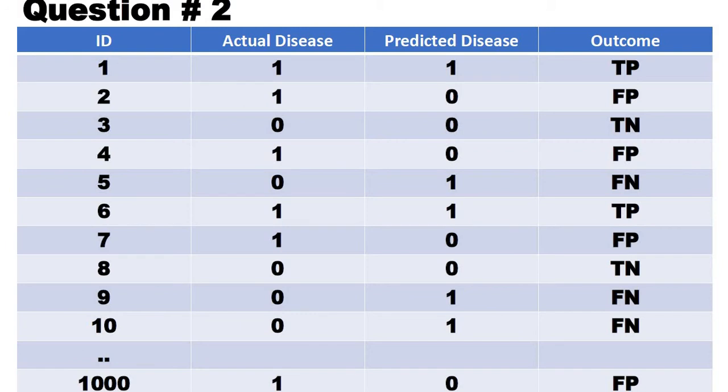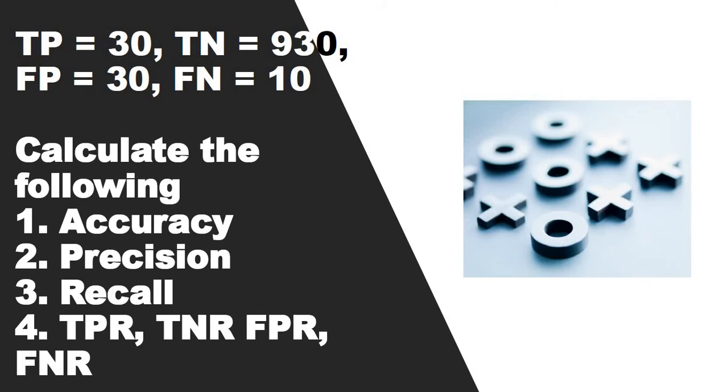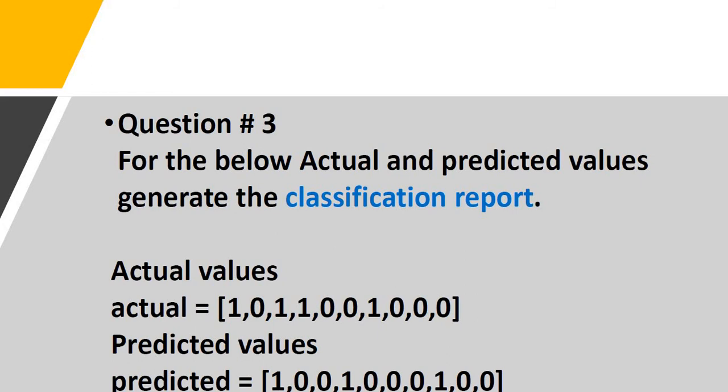After this, we have around one thousand rows in our record where we are comparing the actual value and the predicted value of the disease. We have the total count of the true positive, true negative, false positive, and false negative. You need to calculate the accuracy, precision, recall, true positive rate, true negative rate, false positive rate, and false negative rate.